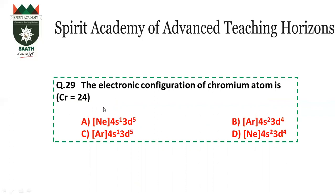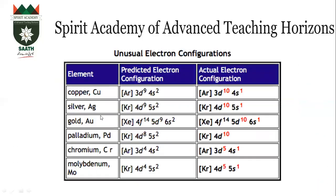Question number 29: Electronic configuration of chromium. Chromium has an abnormal configuration — one electron shifts from S to D subshell. The answer is C. Elements with abnormal configurations include copper, silver, gold, palladium, chromium, and molybdenum, where one electron jumps from the S to the D subshell.